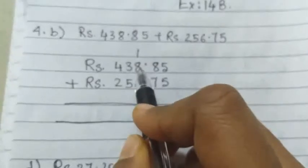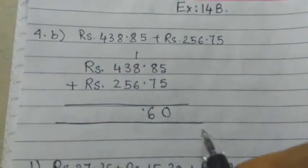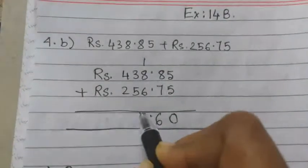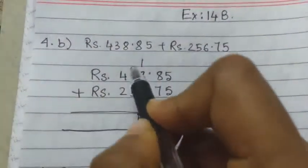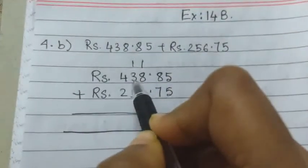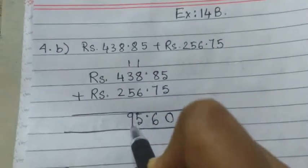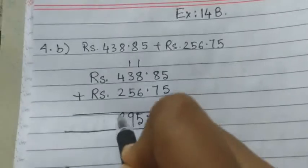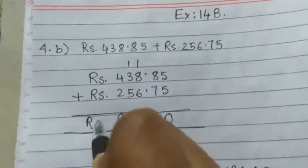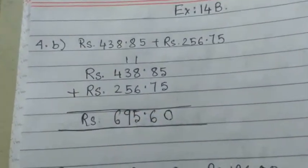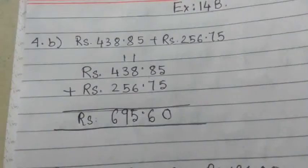Now 1 plus 8 equals 9, 9 plus 6 equals 15, write 5 here, carry 1. 1 plus 3 equals 4, 4 plus 5 equals 9, 4 plus 2 equals 6. So rupees 695 and 60 paise.